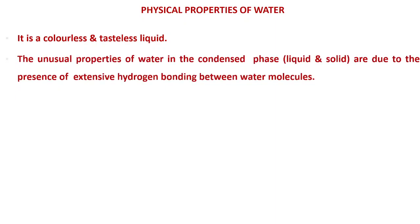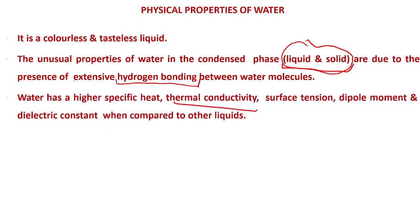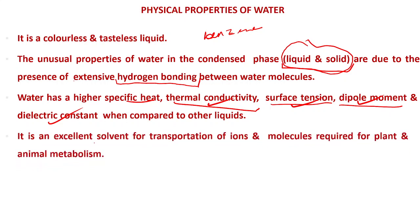The unusual properties of water in the condensed phase — that is, liquid and solid — are due to extensive hydrogen bonding. You will learn more about hydrogen bonding in Chapter 4 on chemical bonding. For now, just remember that water condenses to liquid and solid due to hydrogen bonding between water molecules. Water also has very high specific heat, thermal conductivity, surface tension, dipole moment, and dielectric constant compared to other liquids.